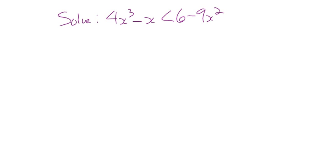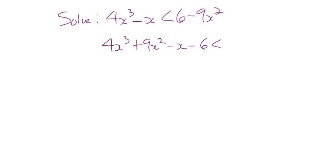So what's step one? Move everything to one side. Even if you're doing it graphically, do that — we call it method two — rearrange the inequality. So let's go: 4x³ + 9x² − x − 6 < 0. Move stuff over. Now we want to get the possible rational zeros.